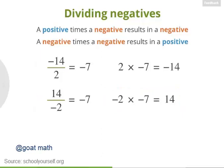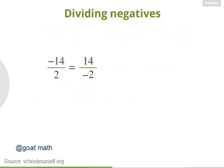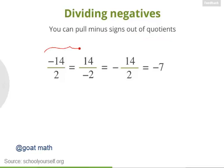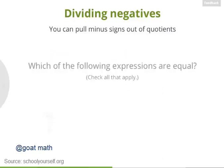So these two expressions are equal. It doesn't matter if the minus sign is in the first number or the second number. So instead of thinking of this as negative 14 over 2 or 14 over negative 2, you can just think of this as negative 14 over 2. So all three of these expressions equal negative 7. The general rule here is that you can pull the minus sign out of a quotient. Negative 14 over 2 and 14 over negative 2 are both just negative 14 over 2.